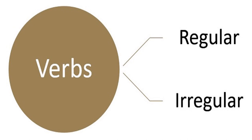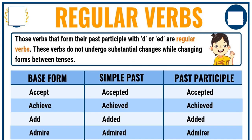Now, verbs can be of two different types — regular or irregular. Regular verbs are those verbs that form their past participle by adding D or ED. These verbs do not undergo substantial changes while changing forms between tenses. For example, if the base form is 'accept', simple past becomes 'accepted' and past participle is also 'accepted' with the simple addition of ED. Similarly, 'achieve' becomes 'achieved', 'add' becomes 'added', 'admire' becomes 'admired'.